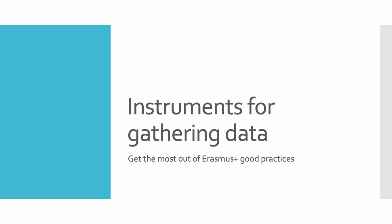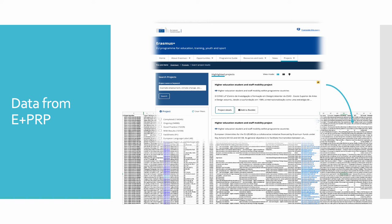Let's review the instruments used for gathering all the data for the analysis. The first step has been to retrieve data of the selected projects from the Erasmus Plus project results platform, which allowed us to obtain many useful data points that help to better understand what made those projects successful.